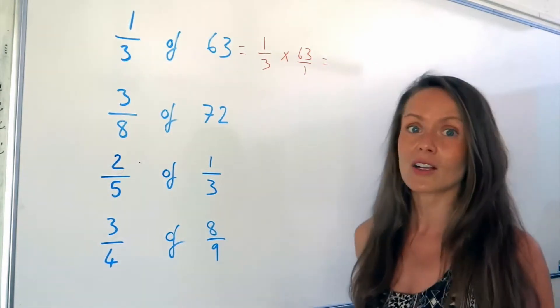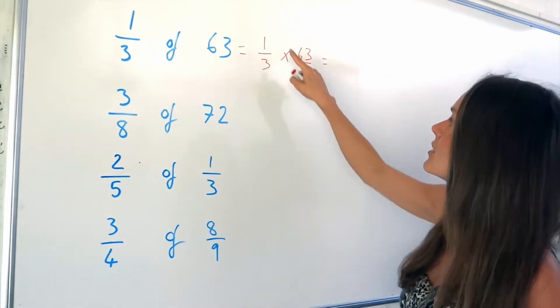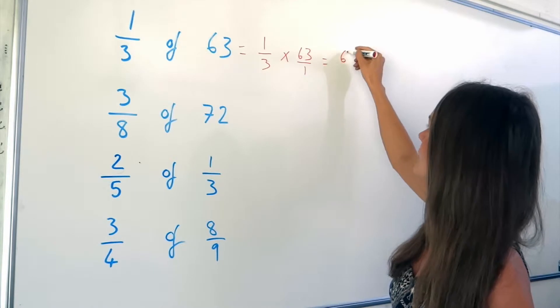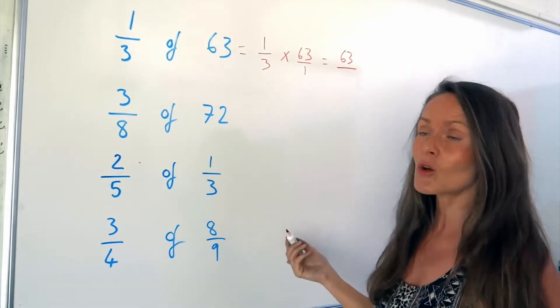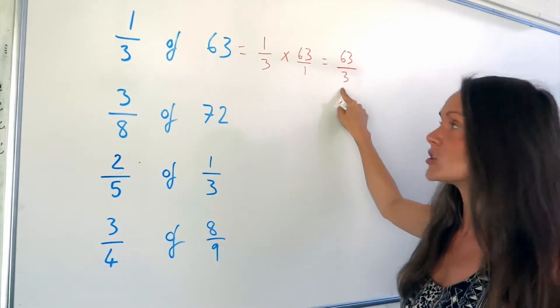So now I can multiply the fractions together. So remember, you need to multiply the numerators together. So 1 times 63 is 63. And then afterwards, the denominators. So 3 times 1 is 3. And we can simplify this fraction.